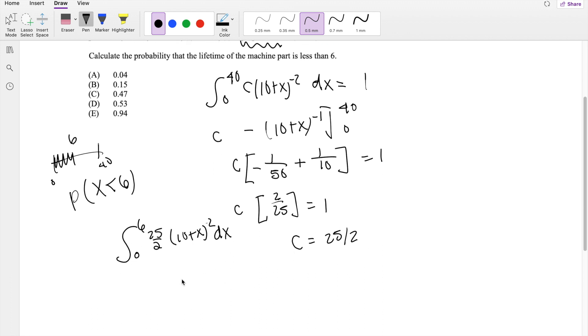Same thing I did on the other side. I'm going to do 25 over 2, throwing it outside. You get negative 10 plus x to the negative 1. Integrating the sucker out from 0 to 6.